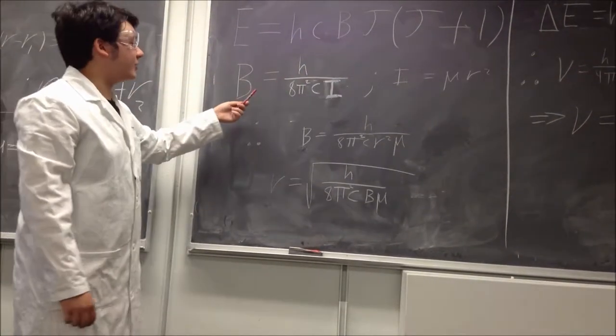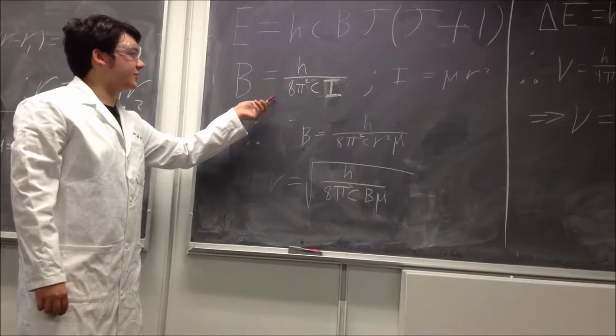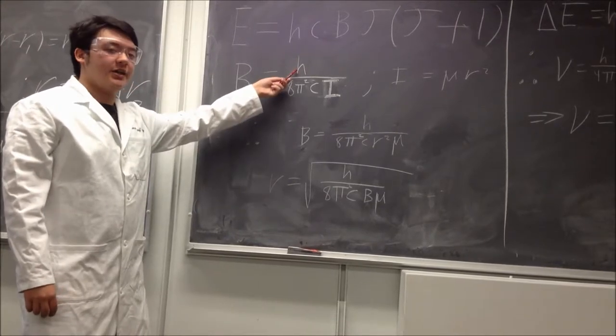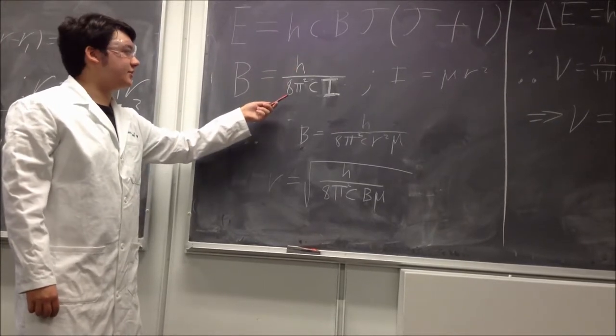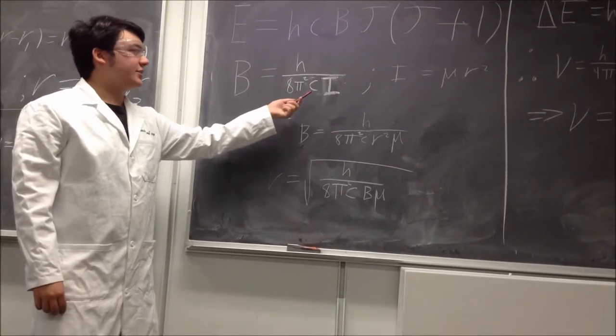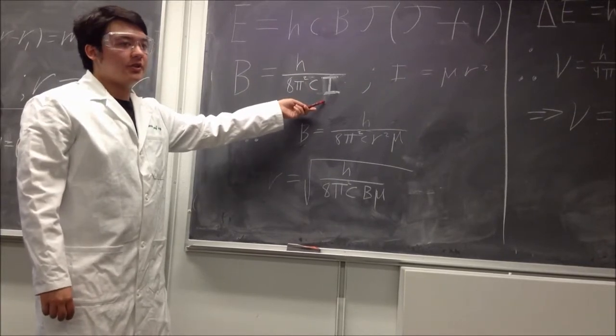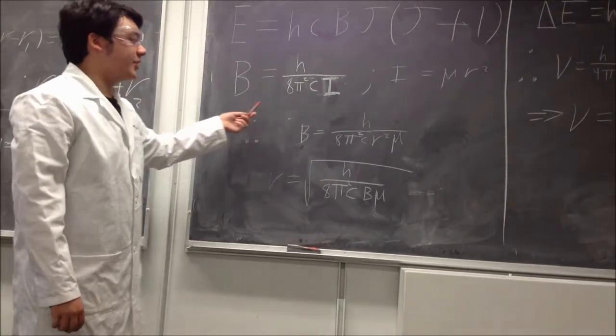We have an equation for the rotational constant presented here with H, Planck's constant, 8 pi squared, the speed of light again, and then we have moment of inertia.